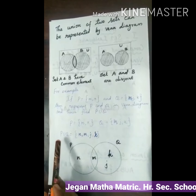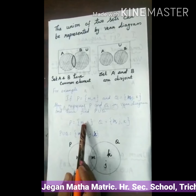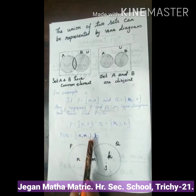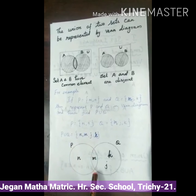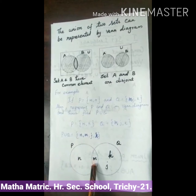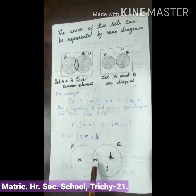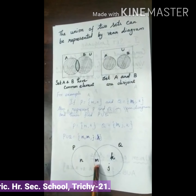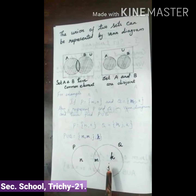What is P union Q? You have to write all the elements in the same set. So P union Q is {N, M, J, K}. It can be represented in the Venn Diagram. First, you have to put the common element M. We have common element M for both sets. So first represent M, then P has N and Q has K and J.